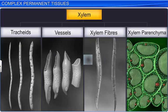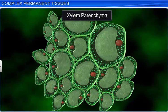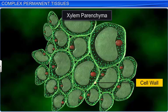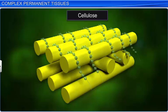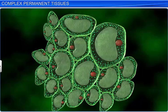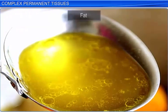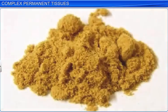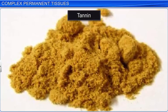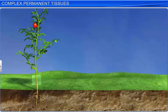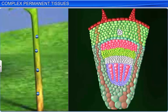Xylem parenchyma is composed of parenchymatous cells. They are living and thin-walled, with cell walls made up of cellulose. These cells store food material as starch or fat, or substances such as tannin.